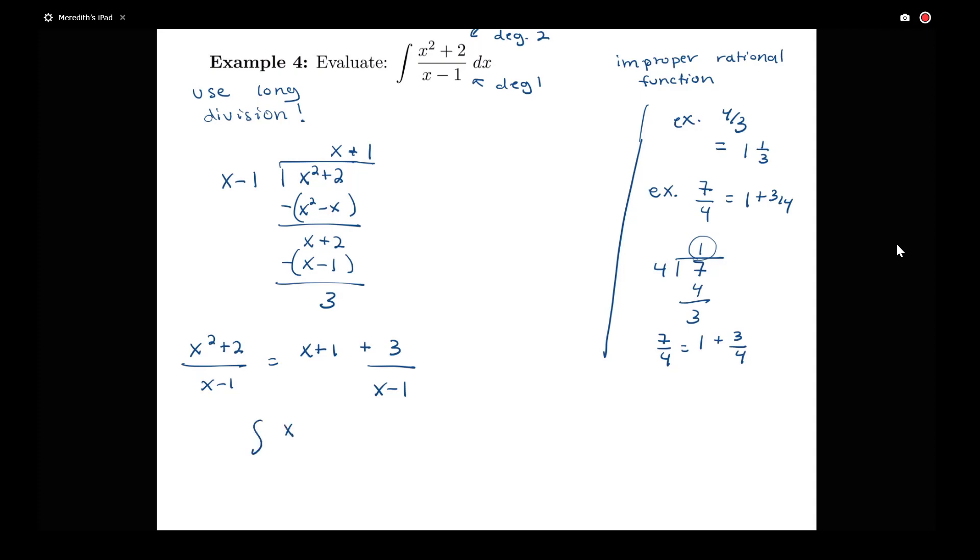Now I can use this long division. I have the integral of x squared plus 2 all over x minus 1 is equal to the integral of x plus 1 dx plus this integral of 3 over x minus 1 dx. I decided to just break that up into two pieces.